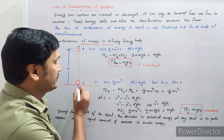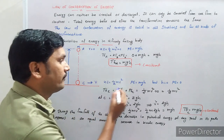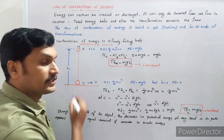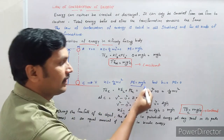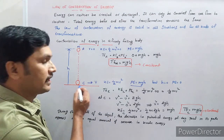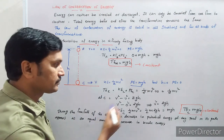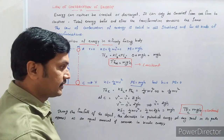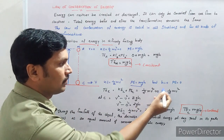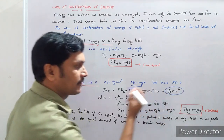Suppose the body reaches point C with velocity V. Its kinetic energy equals half mV squared. At point C, it is at the ground, so height equals zero. Once height equals zero, potential energy equals zero. The total energy at C equals kinetic energy at C plus potential energy at C. Kinetic energy at C is half mV squared, where V is the velocity at C, plus zero — potential energy is zero as height equals zero. So total energy equals half mV squared.